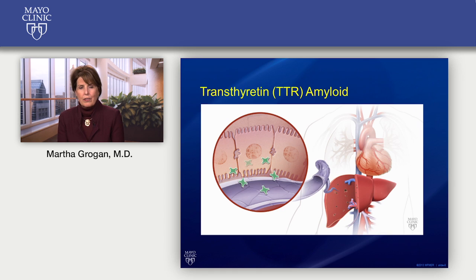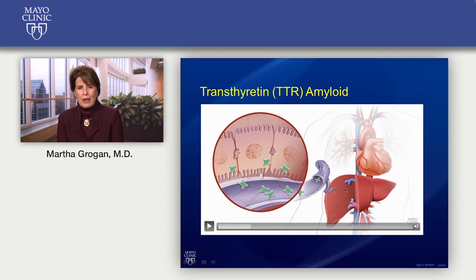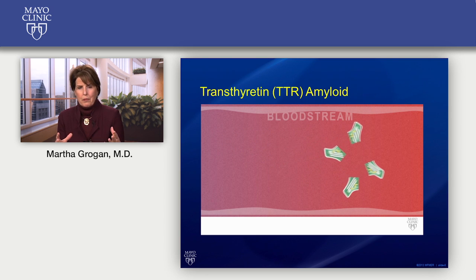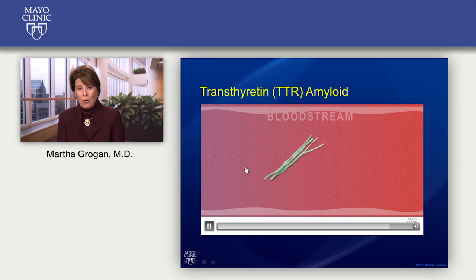In transthyretin amyloidosis, the TTR amyloid protein is a protein that everyone has. We all have transthyretin and it's made by cells in the liver, which release it into the bloodstream where it circulates throughout the body. Transthyretin has four subunits — a four-headed structure — but in amyloidosis it breaks apart, which shouldn't be happening. When it breaks into smaller units, they clump together and form what we call fibrils, and that's eventually what leads to amyloidosis.